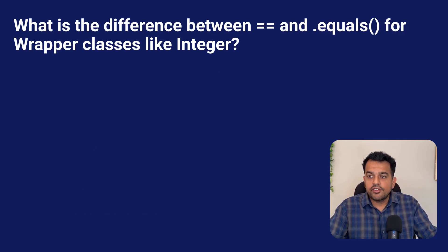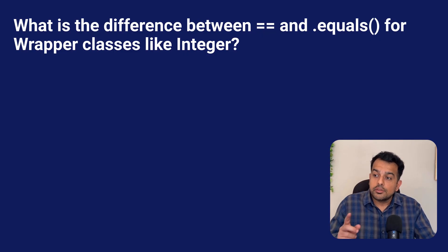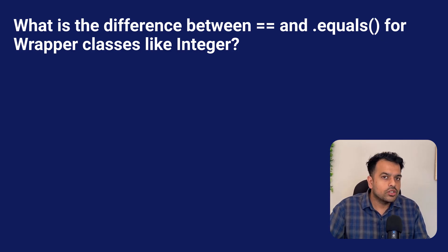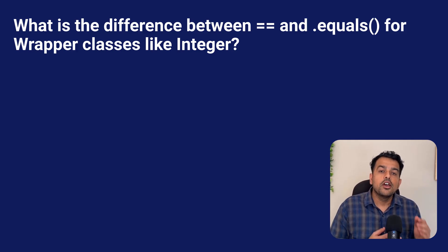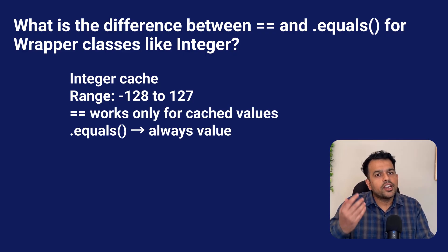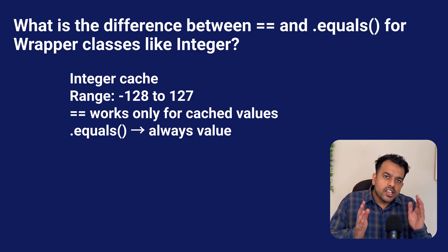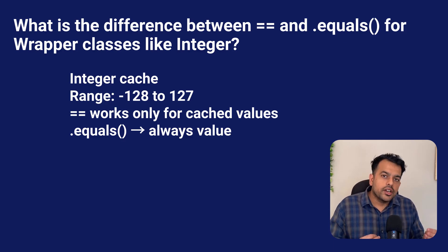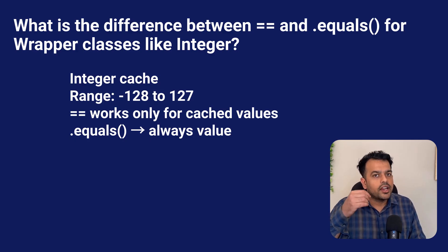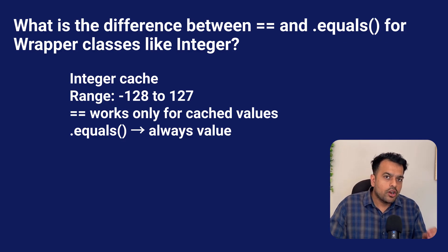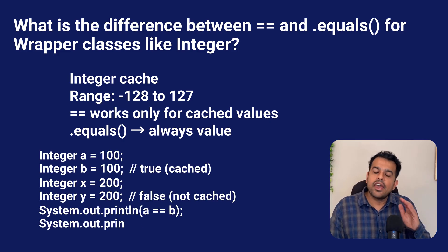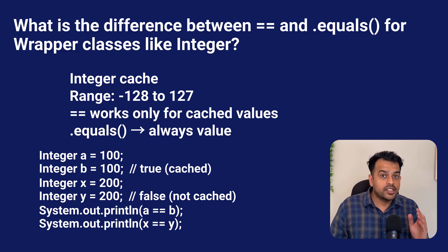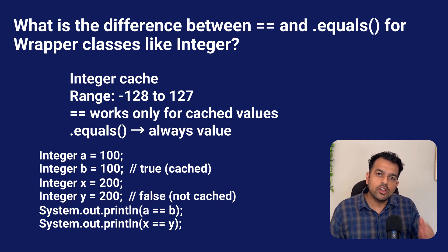The next question is: what is the difference between the == operator and the .equals() method, especially for wrapper classes like Integer? This question looks easy but for wrapper classes it becomes tricky. Integer uses a caching mechanism for values between -128 and 127. If you create two Integer objects with values in that range, they point to the same object, so == returns true for values like 100. But for values outside the cache range like 200, 500, or 1000, new objects are created and == fails because the references are different. The .equals() method always compares values, so it works correctly every time. Interviewers love this question because many candidates explain == versus equals but never mention the Integer cache — once you talk about the cache, you immediately look stronger.